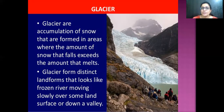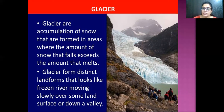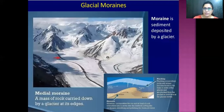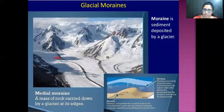The next changes are caused by glaciers. Glaciers are accumulations of snow formed in areas where the amount of snow that falls exceeds the amount that melts — they are basically frozen rivers. Glacial moraines are sediments deposited by glaciers. A medial moraine is a mass of rock carried down the glacier at its edges.